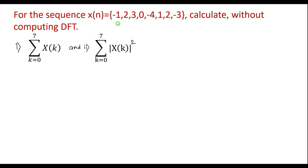In this lecture, consider one example on DFT. For the sequence x of n equal to {-1, 2, 3, 0, -4, 1, 2, -3}, calculate summation k equal to 0 to 7 of x of k, and summation k equal to 0 to 7 of x of k whole square, without computing DFT.